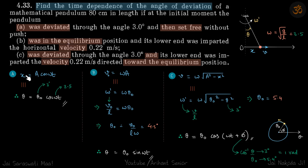The velocity at equilibrium is v_max and when it reaches the extreme it becomes zero. So these relations between angular and linear SHM is what we are going to learn in this problem — we are going to use analogies of linear SHM and relate them to the angular ones. Let's start: find the time dependence of the angle of deviation. We need to find θ as a function of time, if the pendulum was deviated through an angle and then set free.